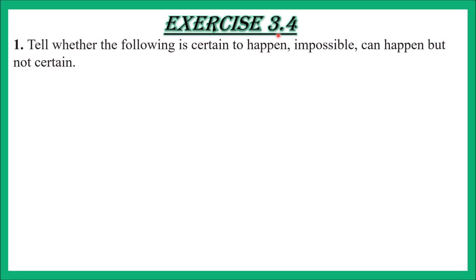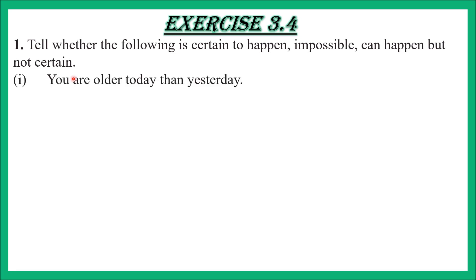Exercise 3.4, question number 1: tell whether the following is certain to happen, impossible, or can happen but not certain. We are given some situations and we have to say whether each event is possible or impossible, and if possible, whether it is certain. Part 1: you are older today than yesterday. This is certain to happen — solution: it is certain to happen.